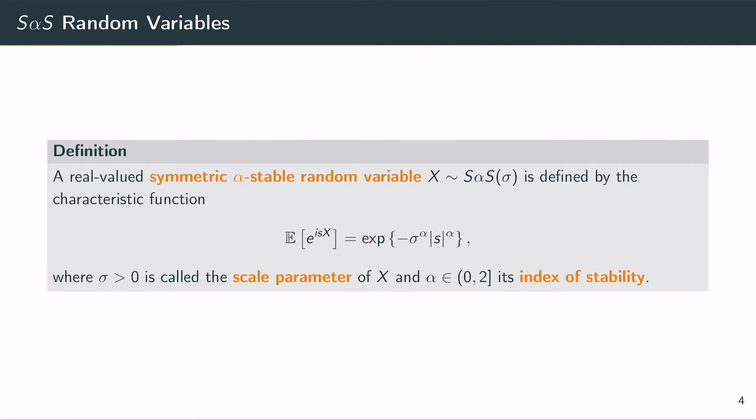The density of stable random variables is usually not explicitly given, but for symmetric alpha stable random variables it is defined by this characteristic function given here, where sigma is the scale parameter of X and alpha is its index of stability. Alpha takes values between zero and two, and for alpha equals two we have a Gaussian random variable.